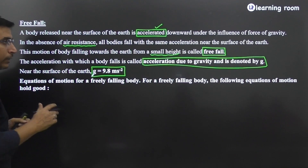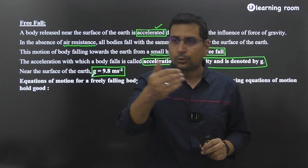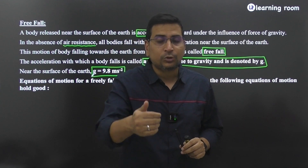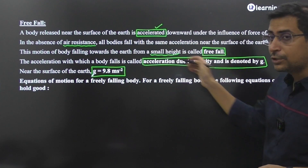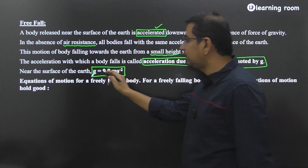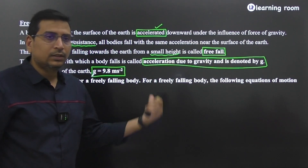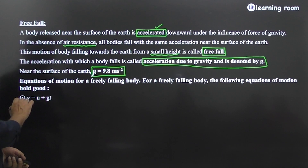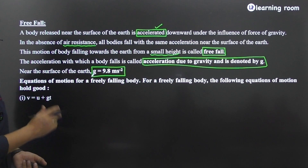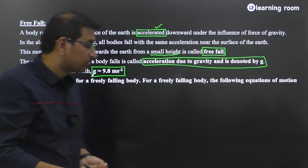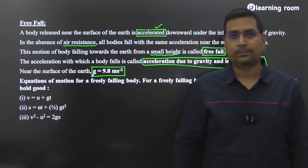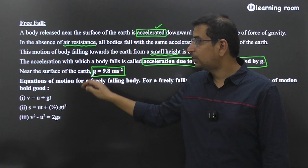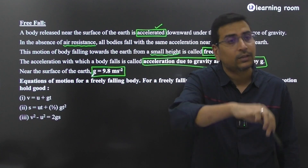If we frame the equations of motion which we learnt previously — v = u + at, s = ut + ½at², and v² - u² = 2as — for an object moving under the influence of gravity, the equations get modified. The only change is that acceleration is replaced with g. So we get: v = u + gt, s = ut + ½gt², and v² - u² = 2gs. Whenever you see an object moving under the influence of gravity, replace the value of a with small g.